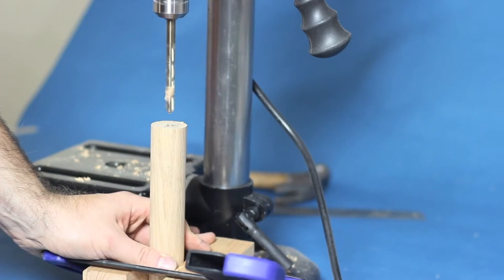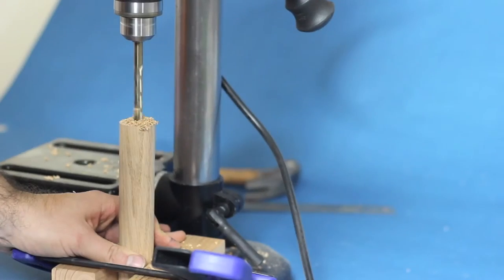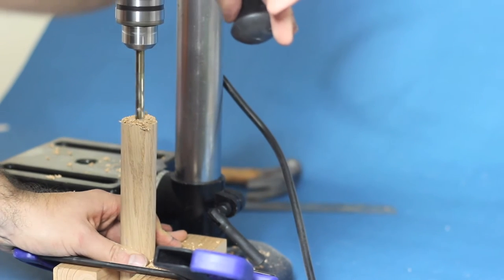Using a three-eighths inch drill bit, drill a hole one inch deep in both sides of the long dowel and in one side of the short dowel.